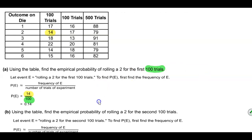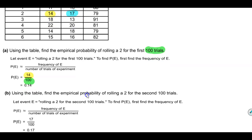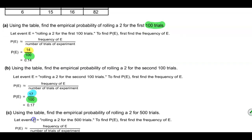Now we're going to use the table to find the empirical probability of rolling a two for the second 100 trials. The second 100 trials is the second column. Here's the first 100 trials. This is your second 100 trials. Therefore rolling a two would be 17. So we're going to take 17 over the total number of those trials, which is 100. Therefore 17 divided by 100 is 0.17.